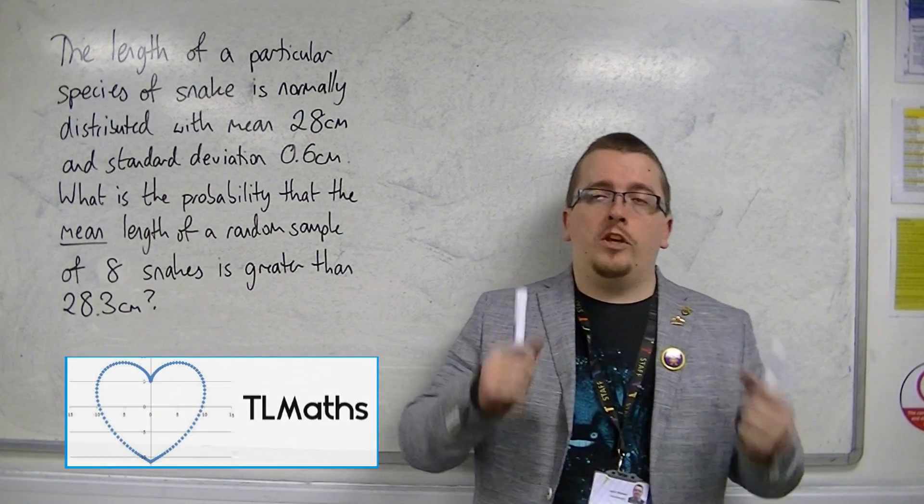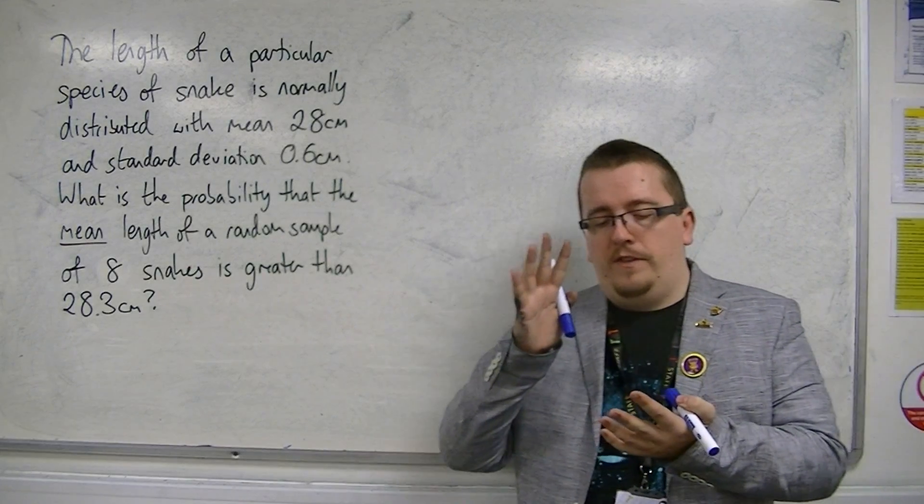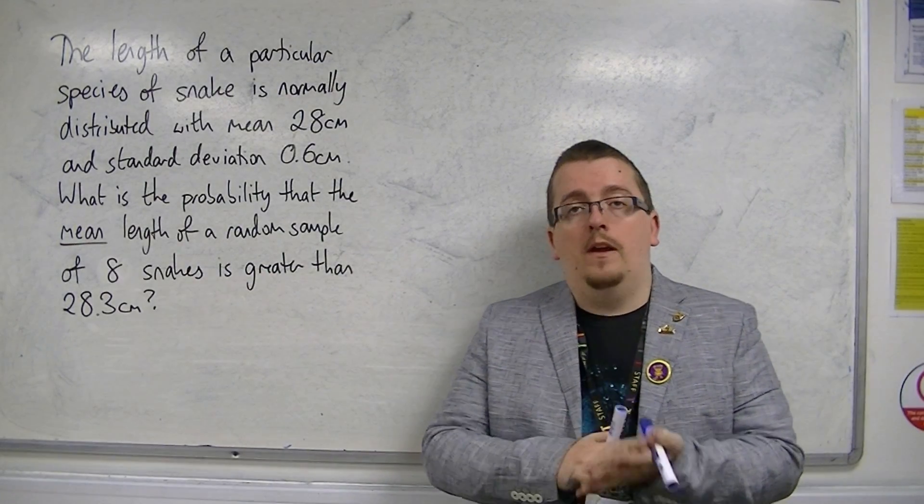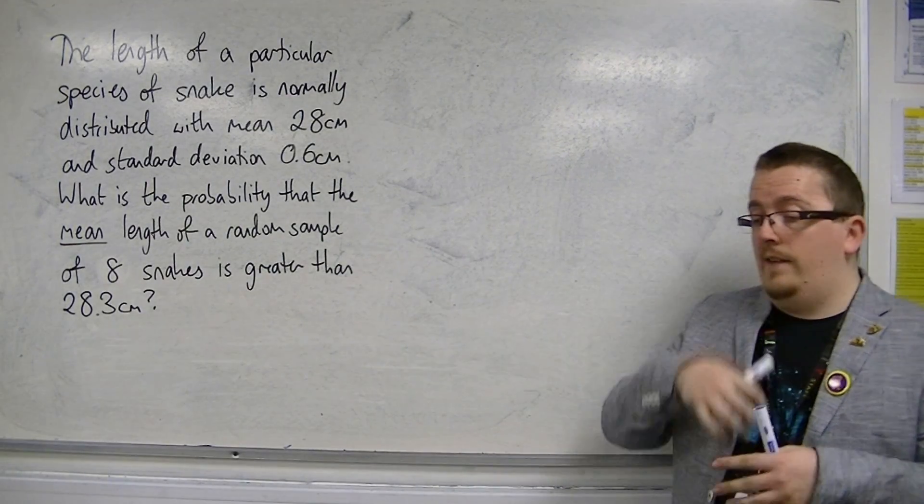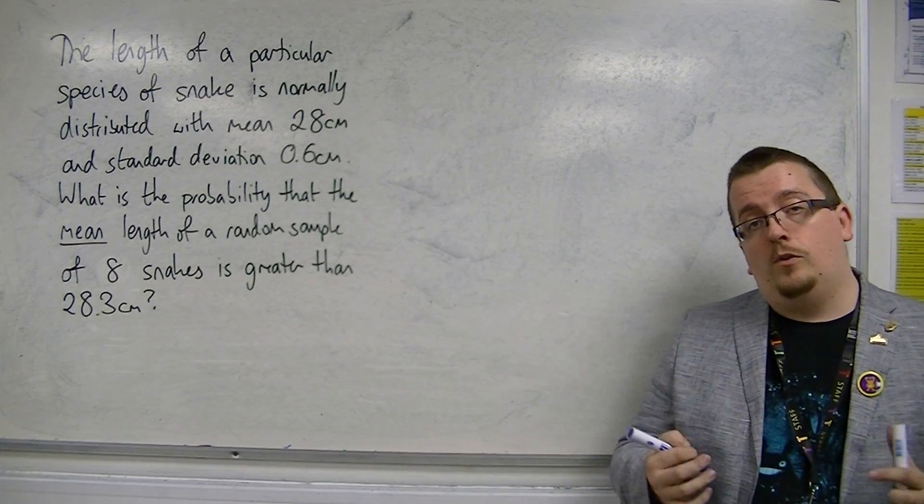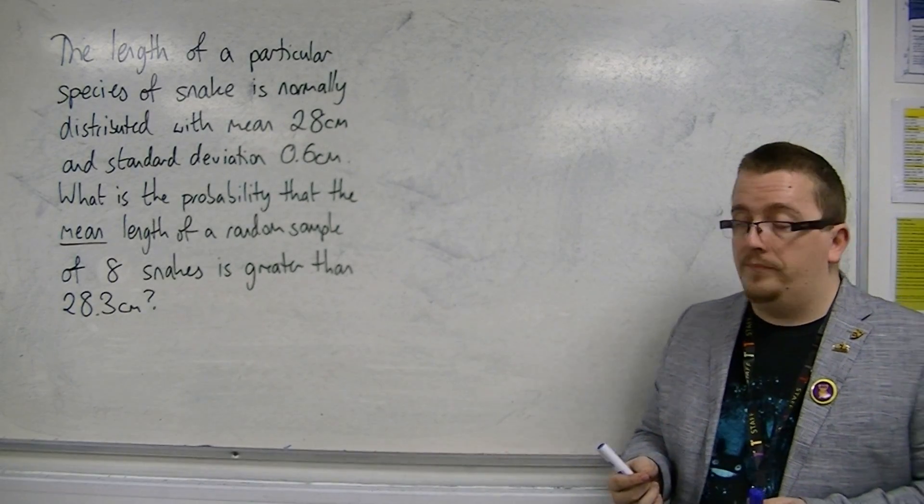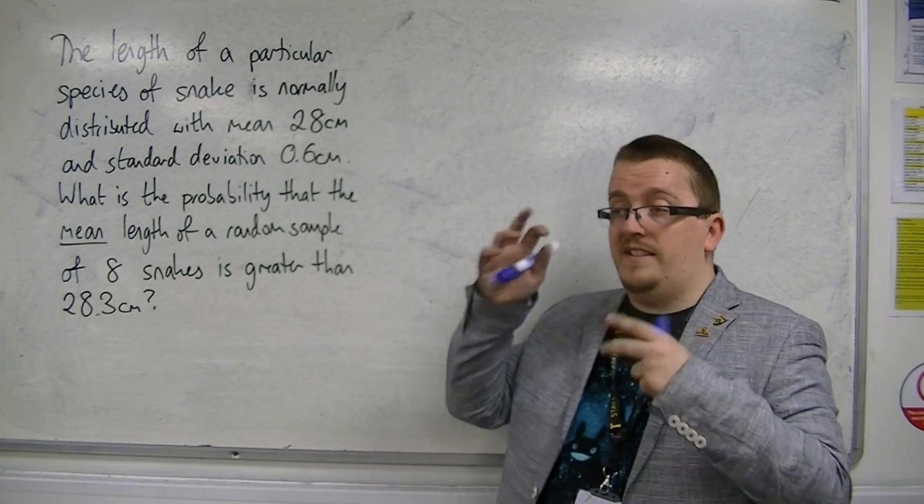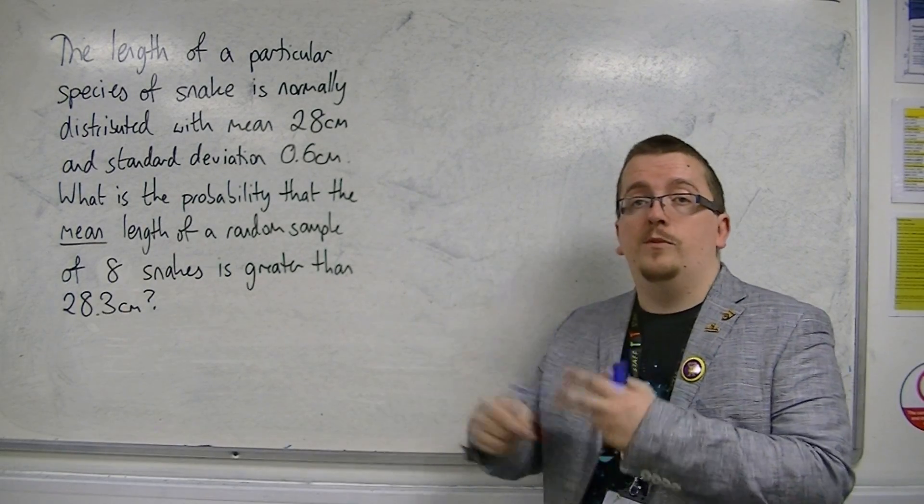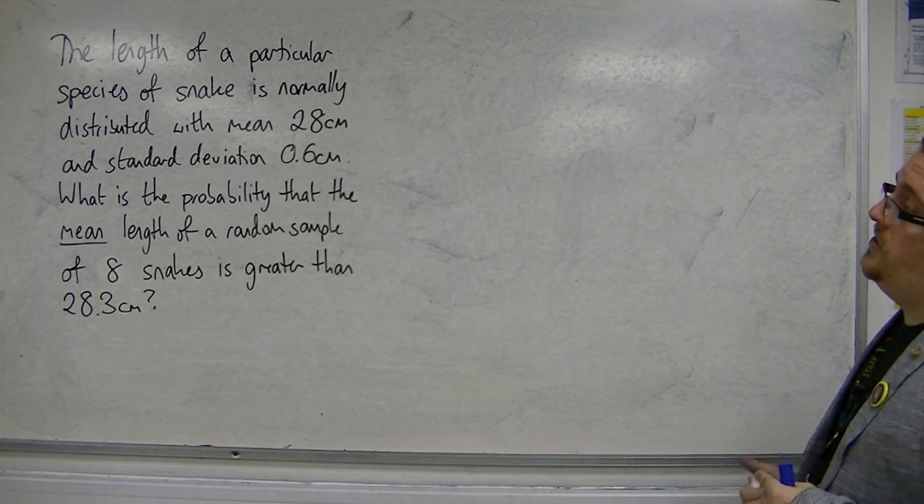I've introduced you to estimation and looking at the normal distribution, specifically looking at the means being normally distributed, and how the number in your sample will change the variance and the standard deviation, which we now refer to as the standard error, sigma over root n. So here is a particular example.